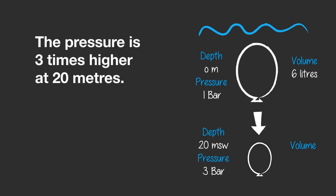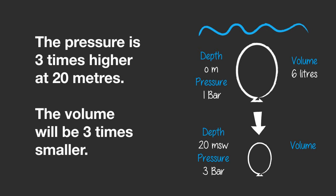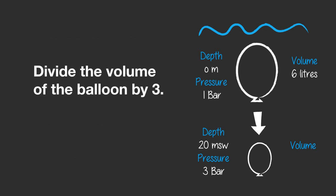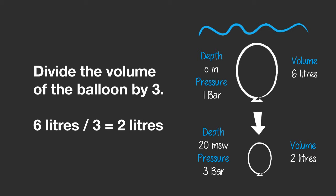The pressure at 20 meters is 3 times higher, and the volume of the balloon will be 3 times smaller. Because the volume is 3 times smaller, we will have to divide the original volume of the balloon by 3. 6 liters divided by 3 is 2 liters, so the new volume of the balloon will be 2 liters.